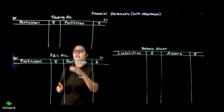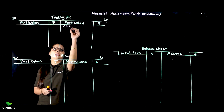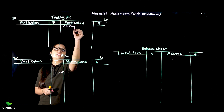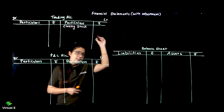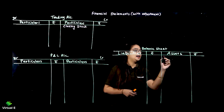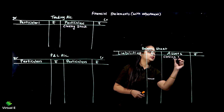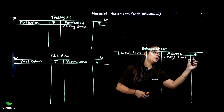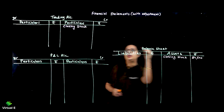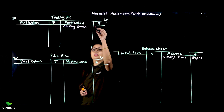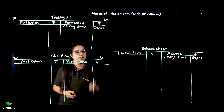First adjustment is fixed - our closing stock. We will write closing stock on the credit side of trading account and on the asset side of the balance sheet. Closing stock amount is 24,500 - here also 24,500. The first adjustment is easy - just transfer closing stock to two places.